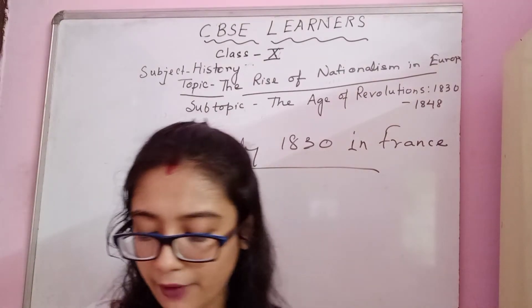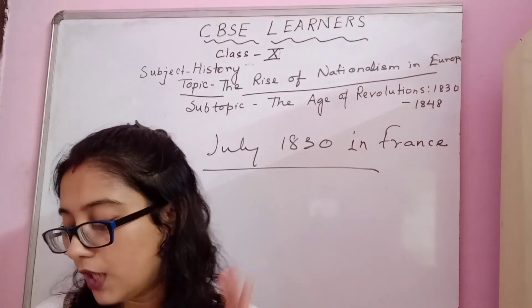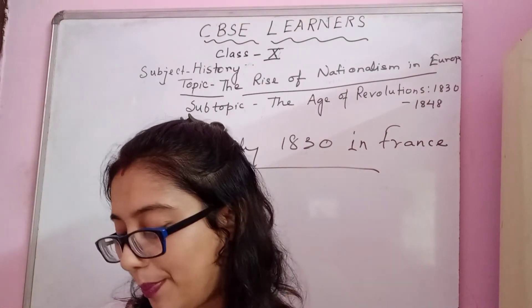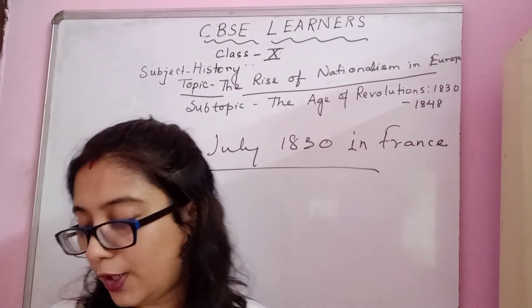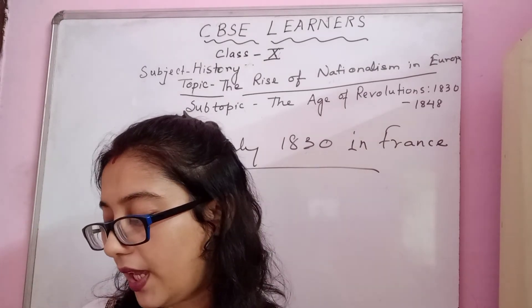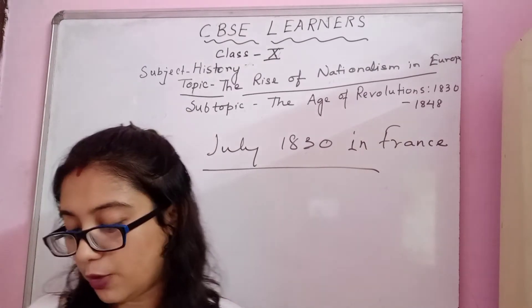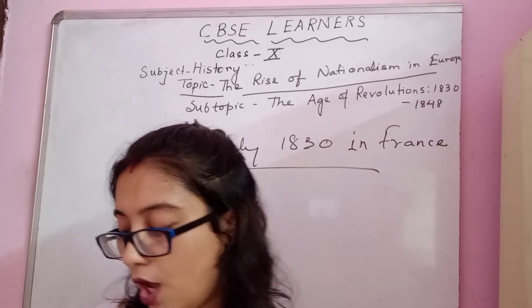The July Revolution sparked an uprising in Brussels, which led to Belgium breaking away from the United Kingdom of the Netherlands.